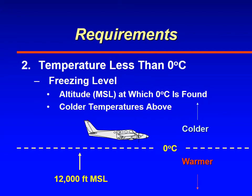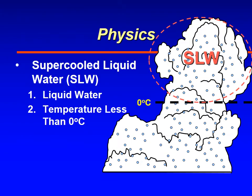As you go higher it's colder; if you descend below the freezing level, it's warmer. Where you have both conditions met — liquid water at temperatures colder than zero — we give that liquid water a special name: supercooled liquid water, abbreviated SLW.